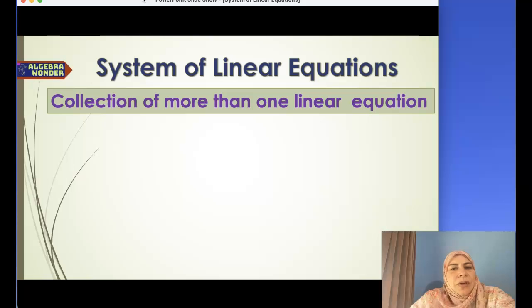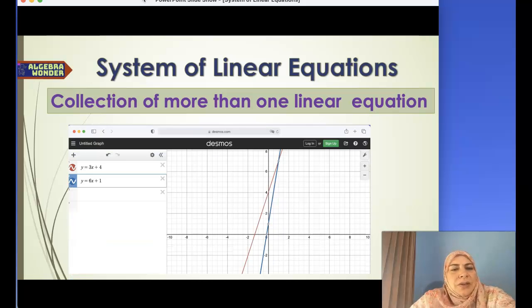It can be two linear equations, three, and so on. Here is an example using Desmos. I have two equations here: y equals 3x plus 4, and y equals 6x plus 1. This is an example of a system of linear equations. You can also have three equations, four, and so on.